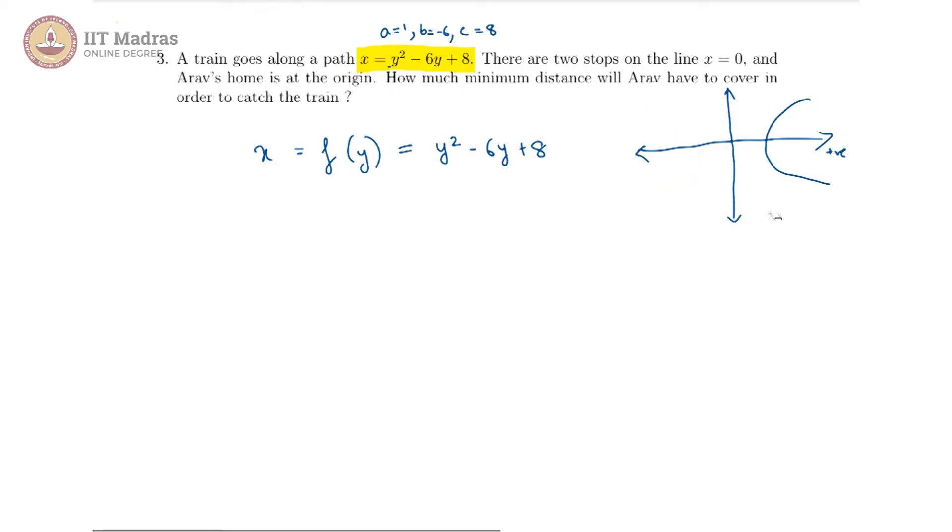Our parabola is expected to be something like this. Of course, it could be moving about, we do not know where exactly it cuts the axis or where the point is, and for that we will have to go further.